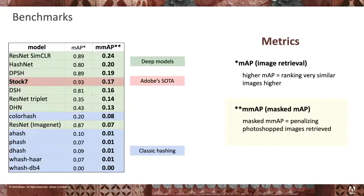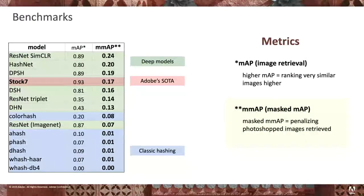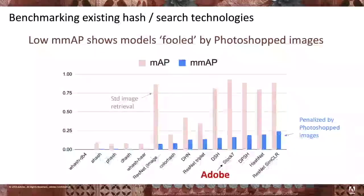We used two metrics. The first is MAP for image retrieval, the standard metric for retrieval evaluation. Since we're also interested in robustness against Photoshop images, we use a modified version called Masked MAP. This metric penalizes models that rank a Photoshopped image higher than the original or its benign edits — essentially penalizing retrieval systems that are fooled by manipulations.